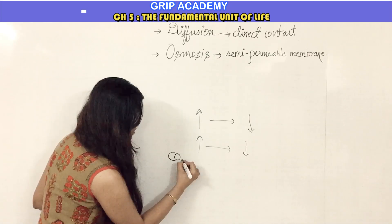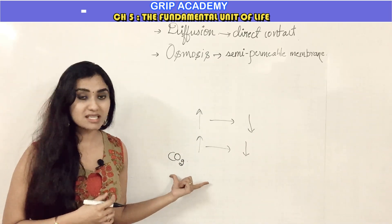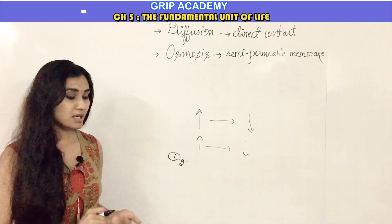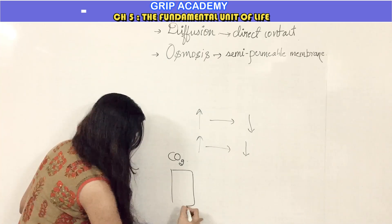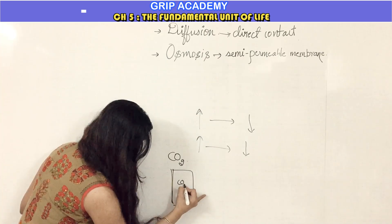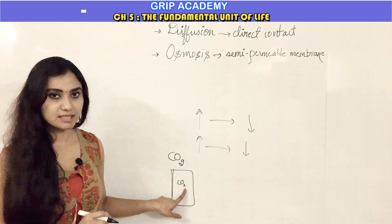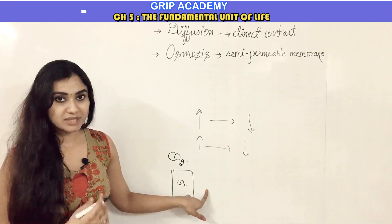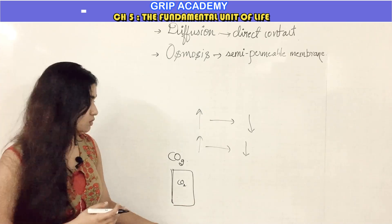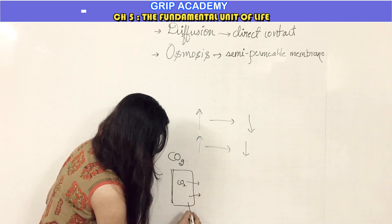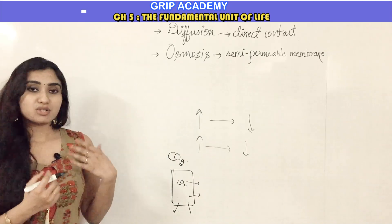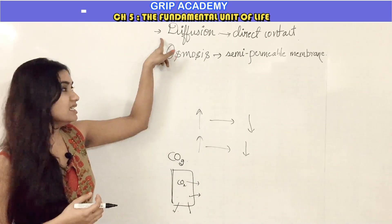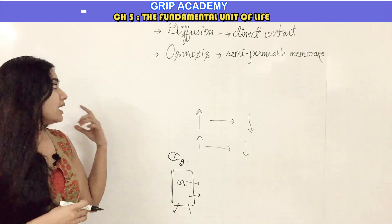To understand diffusion, consider CO2, which is a cellular waste that has to be excreted out of the cell. Because of cellular activities, CO2 keeps accumulating inside the cell. When CO2 concentration becomes higher inside the cell compared to the outer environment, CO2 diffuses out of the cell. Similarly, gaseous exchange in our lungs also happens because of diffusion.